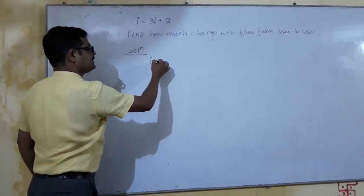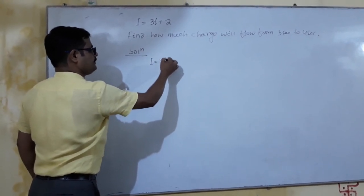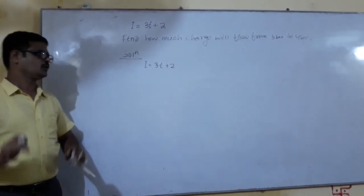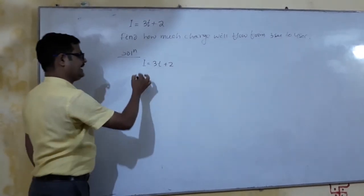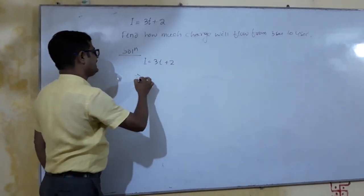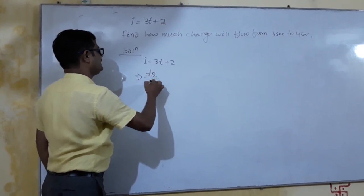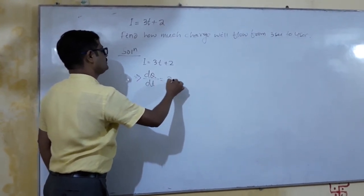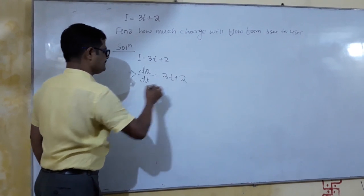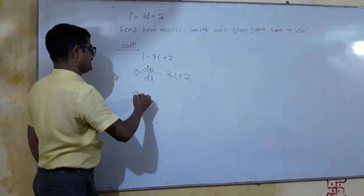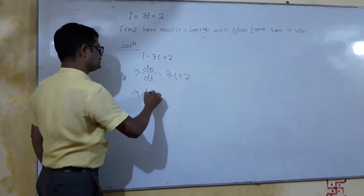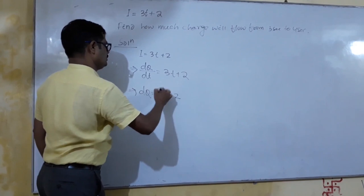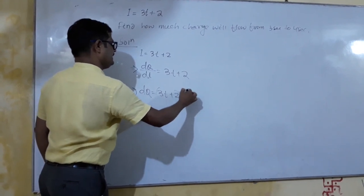i is given as 3t plus 2. In place of i you can write dq by dt. So dq by dt equals 3t plus 2, which means dq equals (3t plus 2) dt.